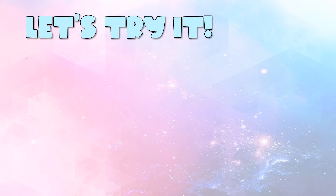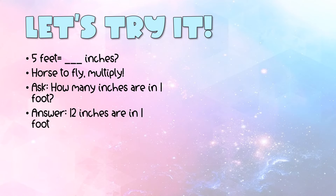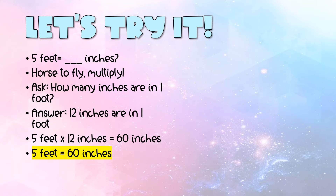Let's try it out. Say I want to convert 5 feet to inches. First I think: horse to fly, multiply — because feet come first, and inches come second. Feet are bigger than inches, so big to small means multiply. Then I ask: how many inches are in one foot? There are 12 inches in one foot, so I multiply 5 feet × 12 = 60 inches. Five feet equals 60 inches.